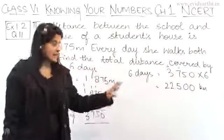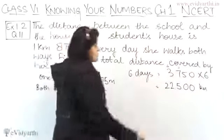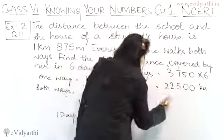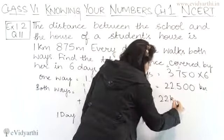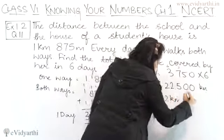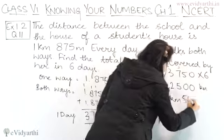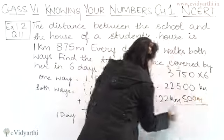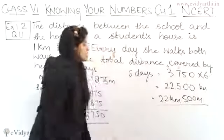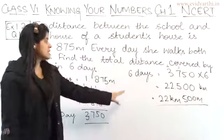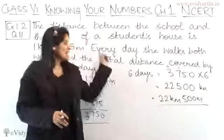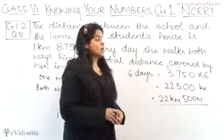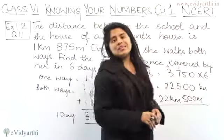So we get 22.500 km — this is the total distance for 6 days. This can also be written as 22 km and 500 meters. So this is the distance covered in 6 days. This was question number 11. Now let's move to the next question.